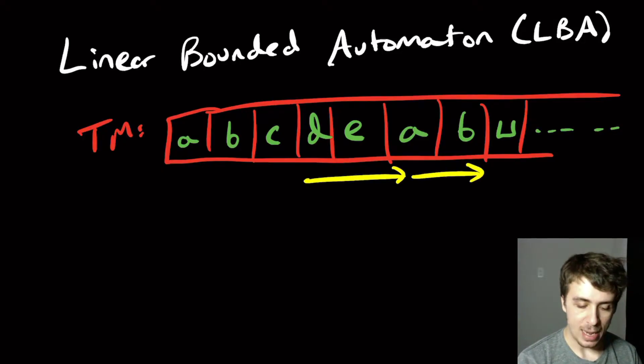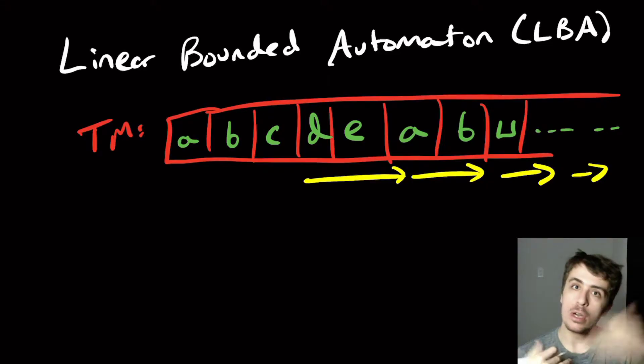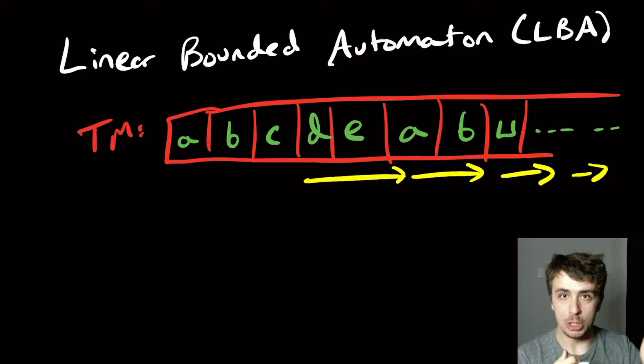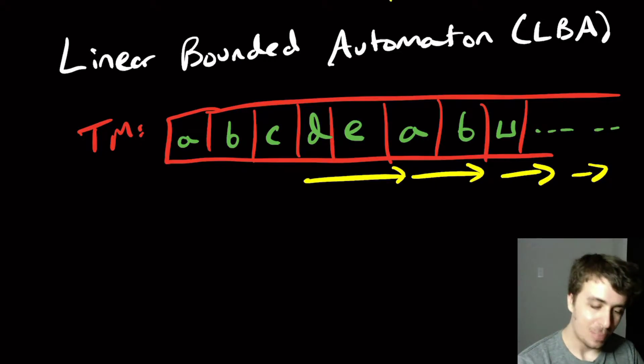Here in a Turing machine we are allowed to keep going right, right, right as much as we want and never have to stop. So we could get an unbounded amount of space. There's no limit to how much space we're allowed to use, but by the title here it...